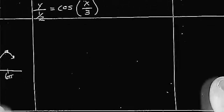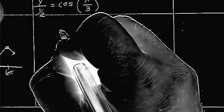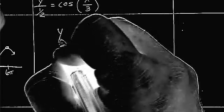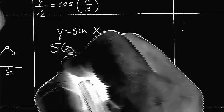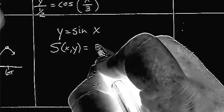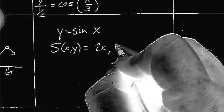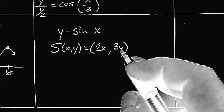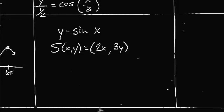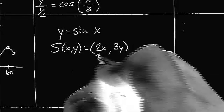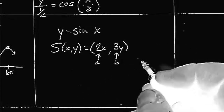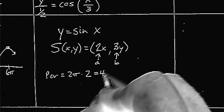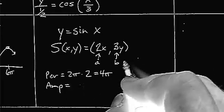Now let's do one with sine. Suppose we started with y equals sine x, and we had a scale change rule of 2x and 3y — so we're doing a stretch in both the vertical and horizontal directions. We know that a is 2 and b is 3. The period is 2 pi times a, which is 4 pi. The amplitude is the absolute value of b, which is 3.